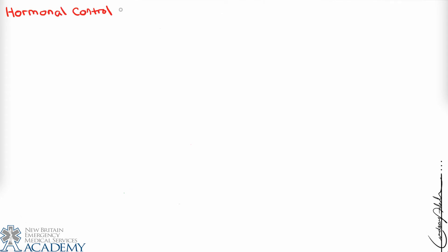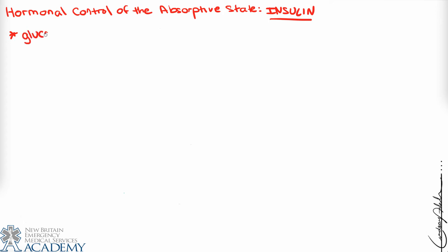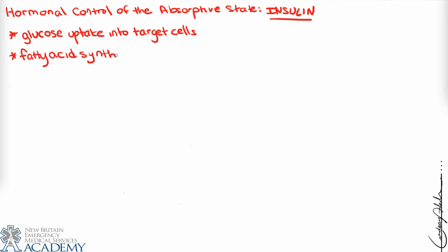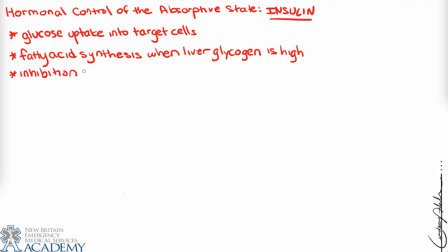The primary hormone controlling the absorptive state is insulin. Insulin has a multitude of functions: it facilitates glucose entry into adipose cells, and it stimulates fatty acid synthesis when liver glycogen is high.